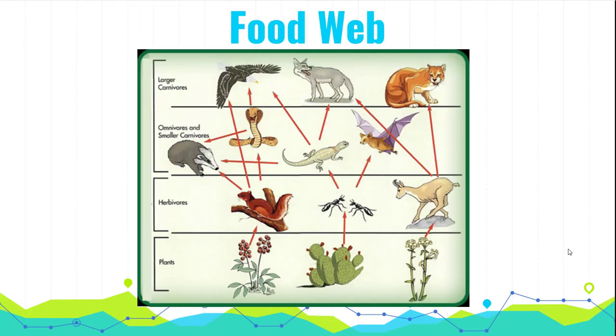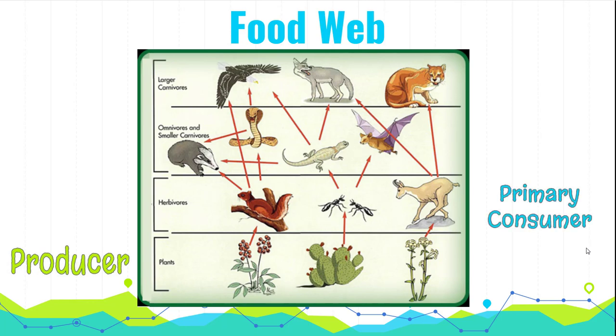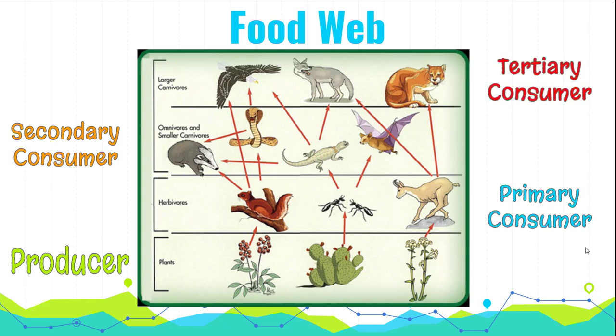Just like we did with food chains, we're going to practice now with food webs. Remember, your bottom level is your producers, then you have your primary consumers, your secondary consumers, and the tertiary consumers. Remember to follow the arrows, and when we're reading an arrow, we're going to say eaten by.